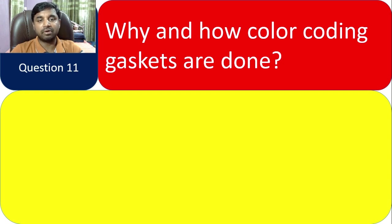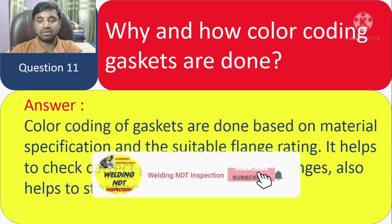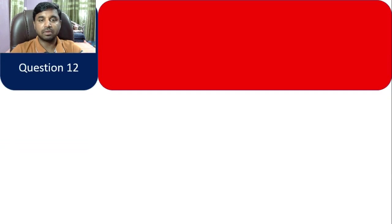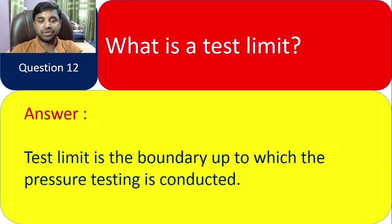Question 11: Why and how is color coding of gaskets done? Color coding of gaskets is done based on material specification and the suitable flange rating. It helps to check that the correct gaskets are used on flanges, and also helps to store and handle gaskets easily. Question 12: What is the test limit? The test limit is the boundary up to which the pressure testing is conducted.